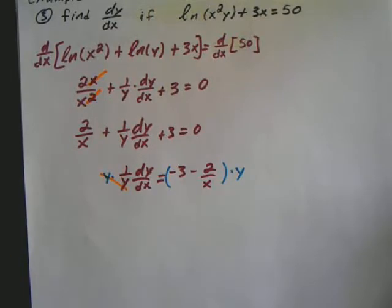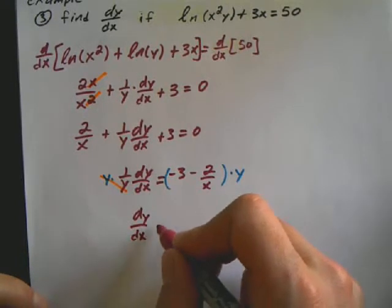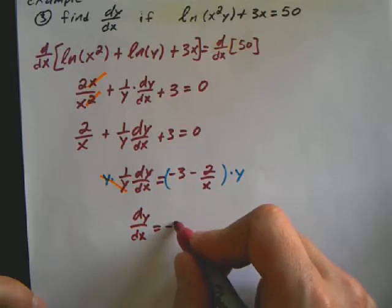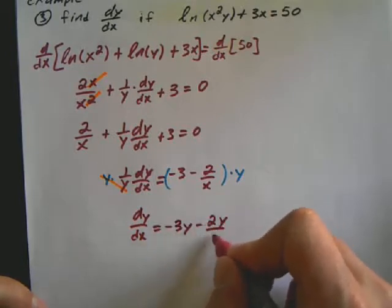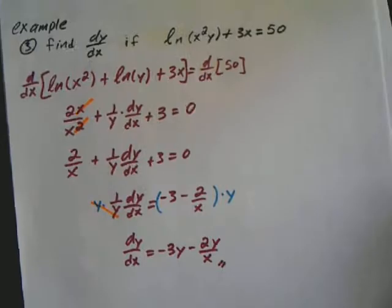So my derivative, my dy/dx is going to be, now because I'm multiplying every term by y, I'm going to distribute what's going to be negative 3y, minus 2y over x. And that's your answer for number 3.